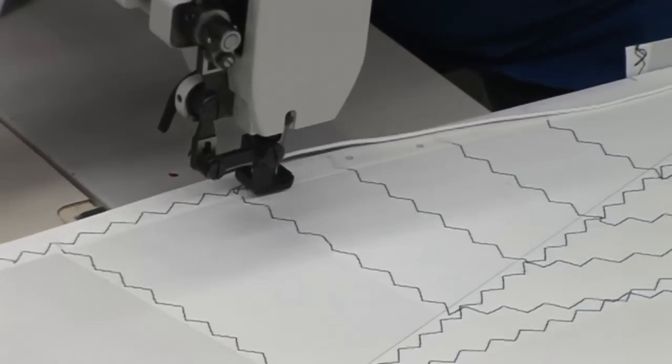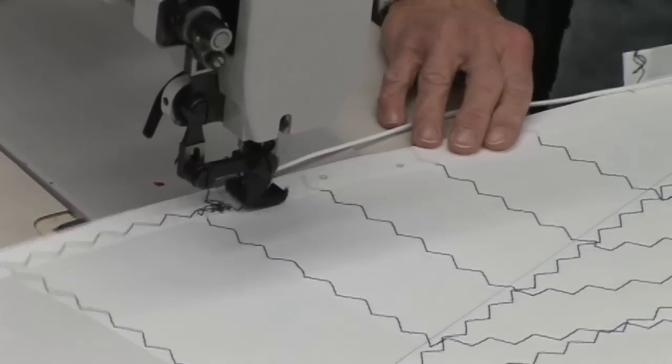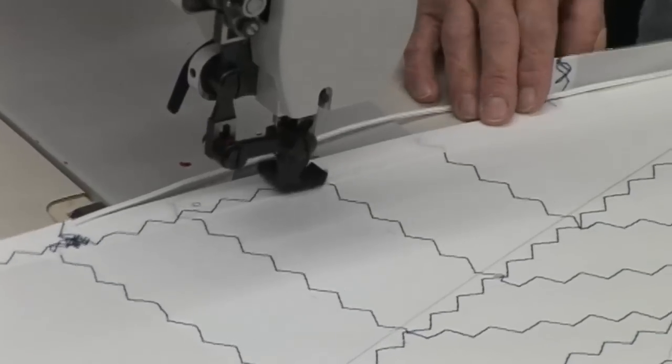We'll not sew on that excess piece of Dacron tape yet, so Deb positions the sail so that she can sew along that edge as well.